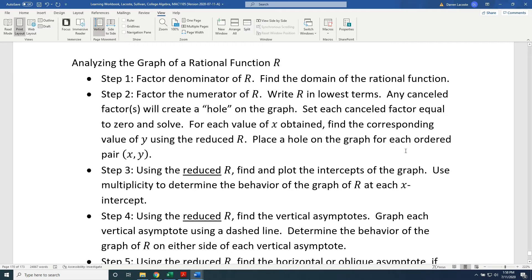Step 2: Factor the numerator of R. Write R in lowest terms. Any canceled factors will create a hole on the graph. Set each canceled factor equal to zero and solve. For each value of x obtained, find the corresponding value of y using the reduced R. Place a hole on the graph for each ordered pair.